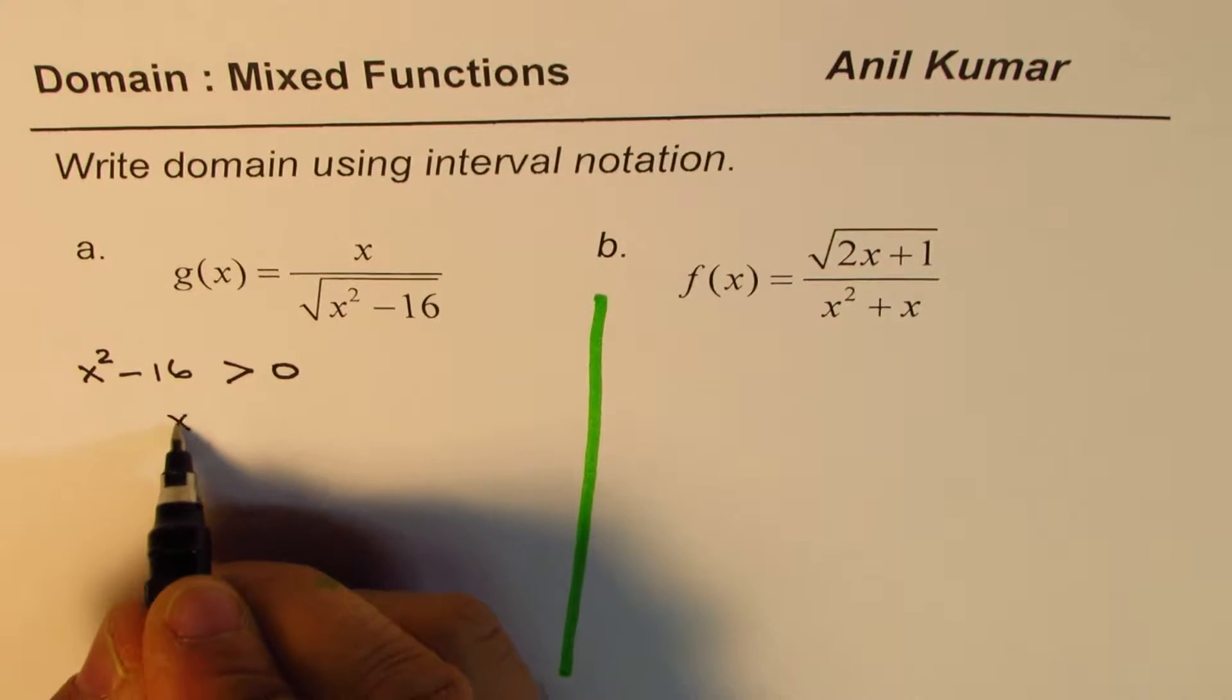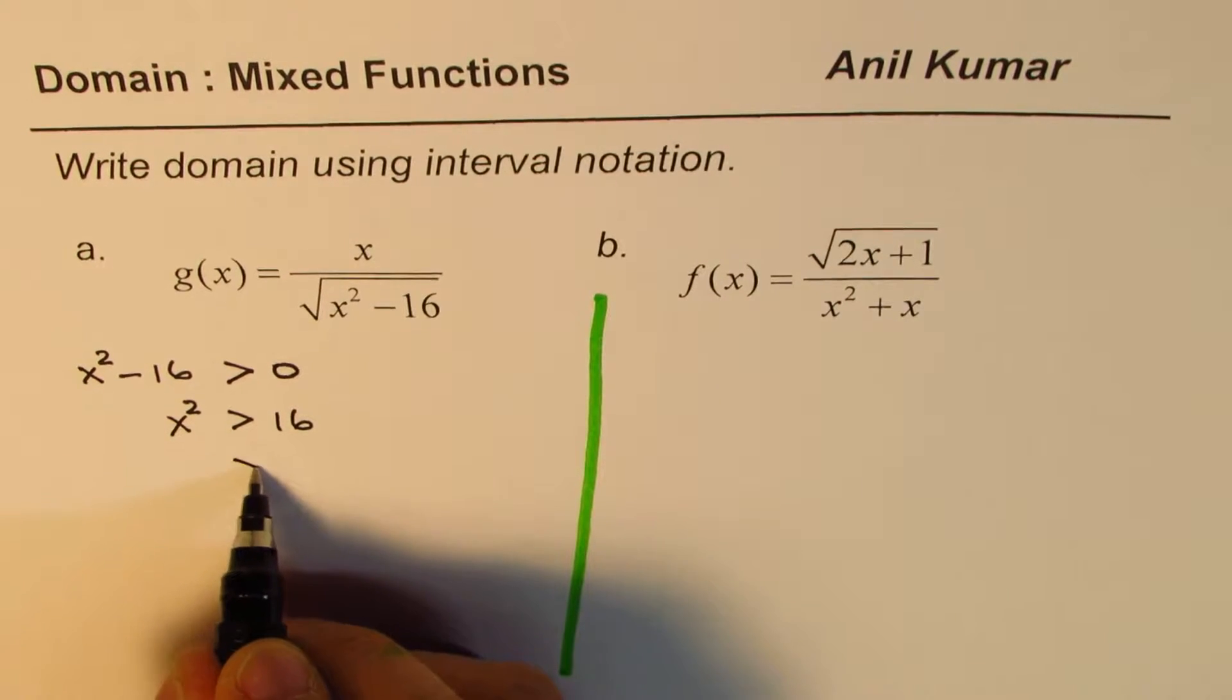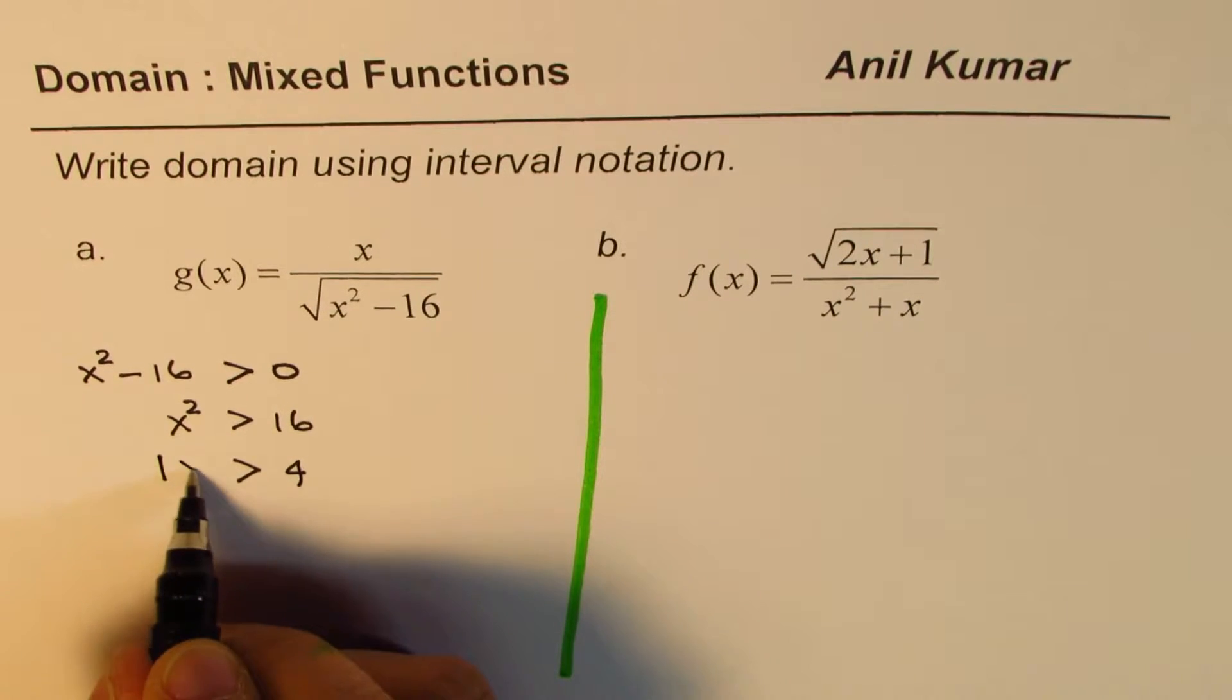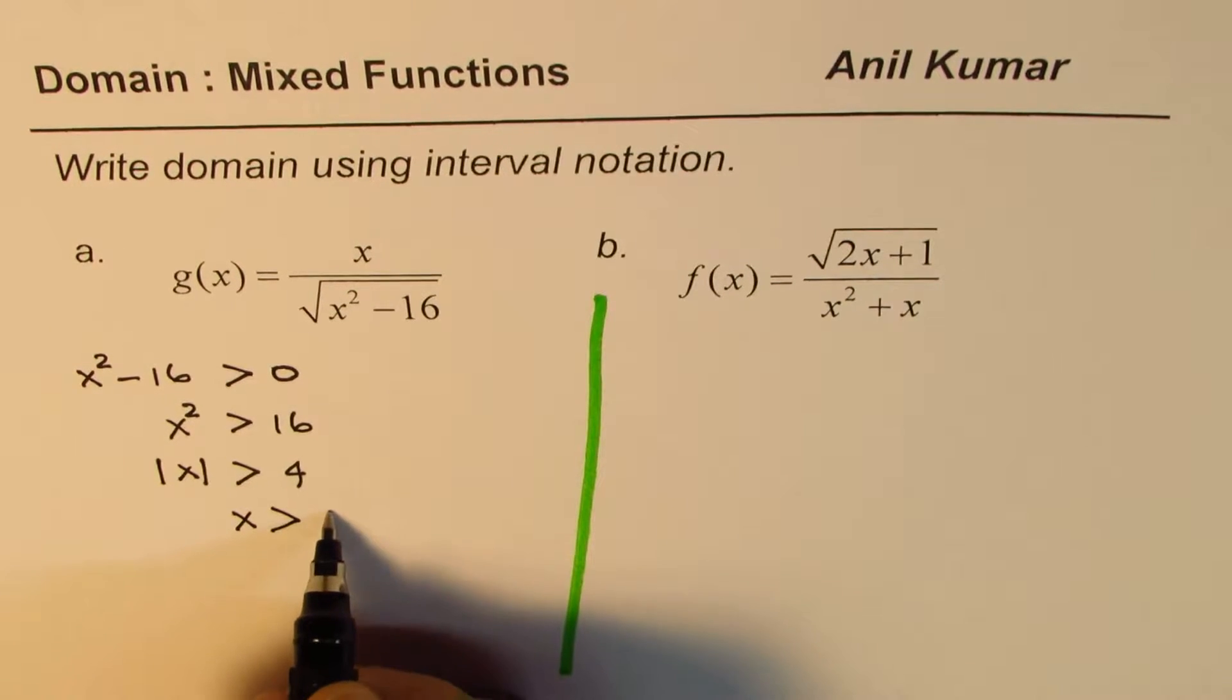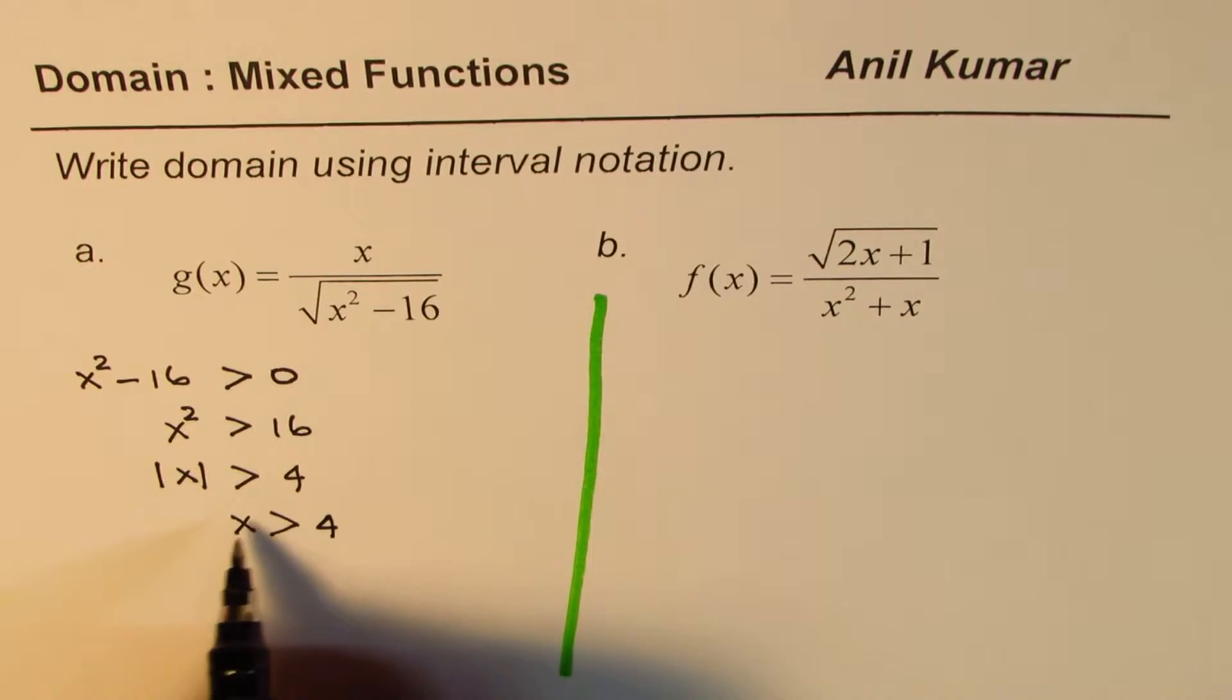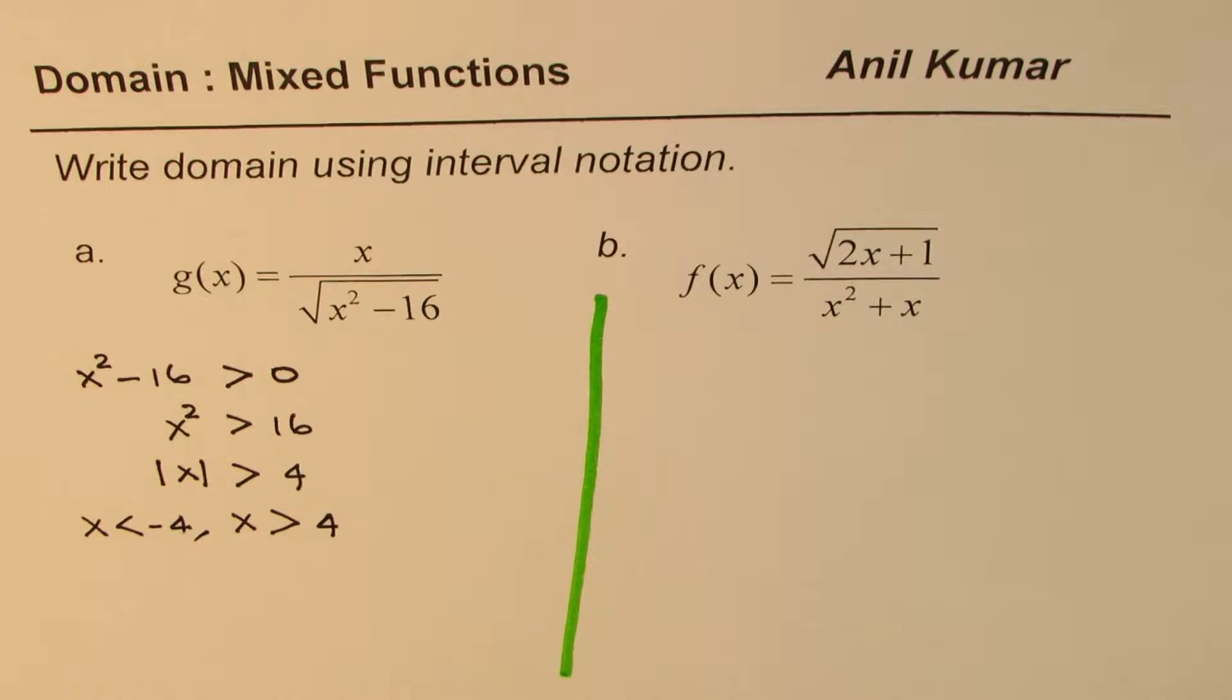This inequality you can solve as x squared is greater than 16. When you do square root, square root of 16 is 4, and square root of x squared is absolute value of x. So absolute value of x has to be greater than 4. That means x is greater than 4, and on the other side it is less than minus 4.